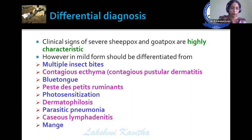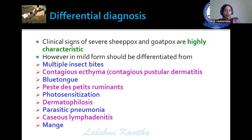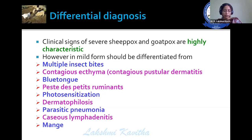Other differentials include photosensitization, identified by history of eating poisonous plants, and dermatophilosis, a clinical disease caused by Dermatophilus congolensis in sheep. Dermatophilosis occurs seasonally during the rainy season — when animals are wet for a long duration, bacteria multiply, causing skin lesions with patchy areas of skin that peel off.